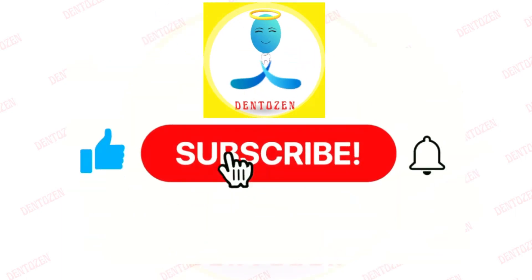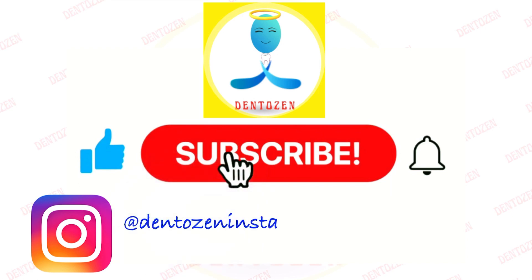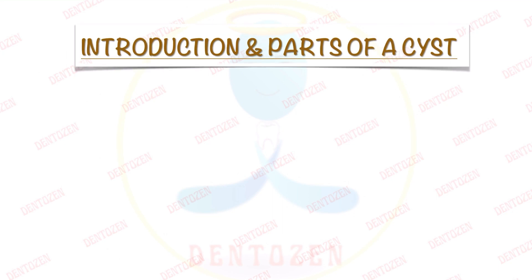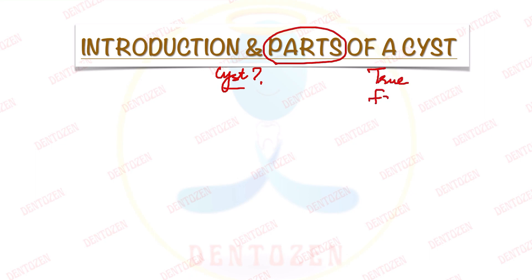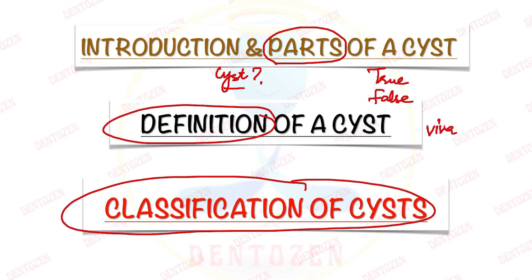Before we begin, I want you to subscribe to Dentizen if you have not done that till now. Also follow me on Instagram and Facebook for more related content and viva questions. In this video we are going to understand what is a cyst, what are the parts of a cyst, what is a true cyst and what is a false cyst, the definition of a cyst which is a very important viva question, and then the classification of a cyst which is an important exam question.